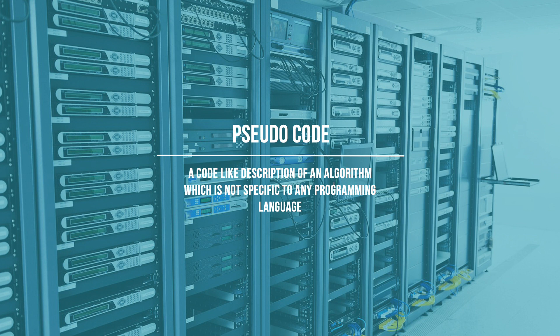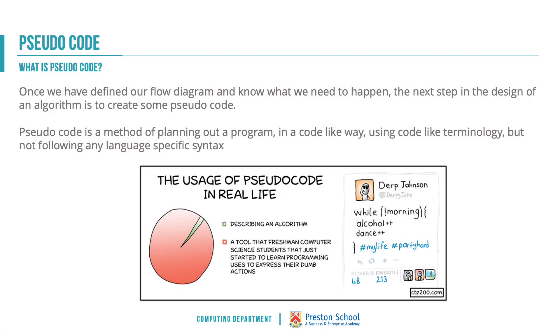Pseudocode is our next step in the design process — it is a code-like description of an algorithm which is not specific to any programming language. We'd create pseudocode once we've finished our flow diagram. It is a method for beginning to plan out exactly how our code will look but without following any specific programming language. It would be a mistake in your exam if asked for pseudocode to write Python code — that would not be correct.